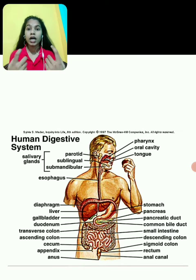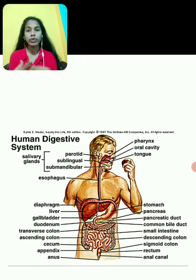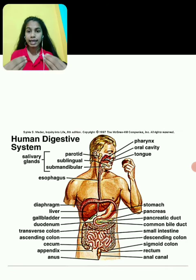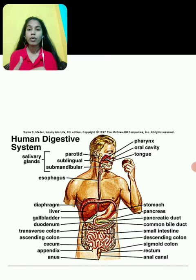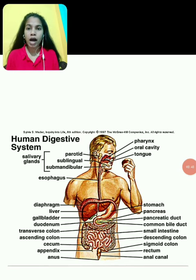The alimentary canal can be divided into three types: the first one is foregut, the second one is midgut, and the third one is hindgut. Foregut is ectodermal in origin — it is from the mouth to the buccal cavity or oral cavity. Midgut is endodermal in origin and it is from the pharynx to the colon. Hindgut is ectodermal in origin and it is from the rectum to the anus.